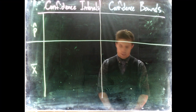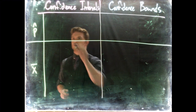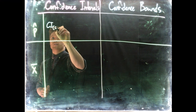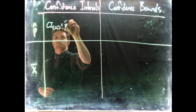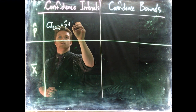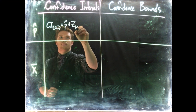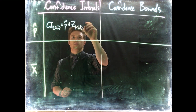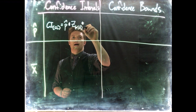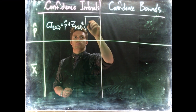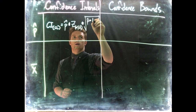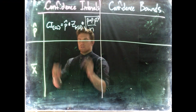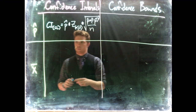Let's put up our confidence interval equation. For p-hat, the confidence interval at the specific confidence level is equal to p-hat plus or minus z(α/2) — because it's two-tailed — multiplied by the square root of p-hat times 1 minus p-hat divided by n. That's our equation for the confidence interval for proportions.